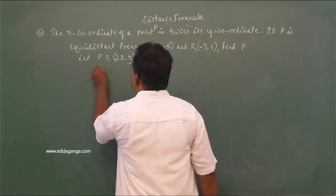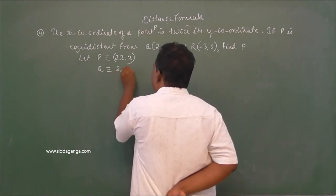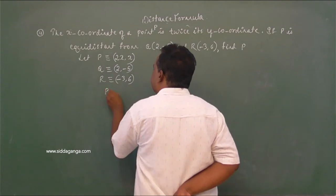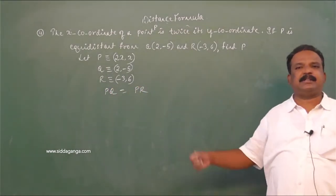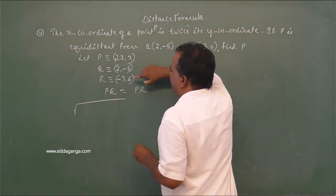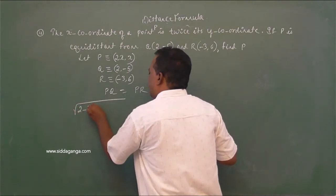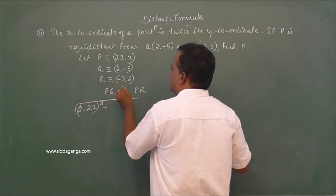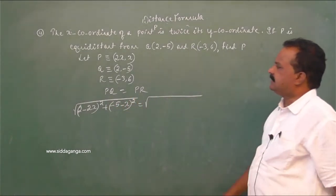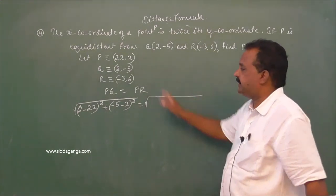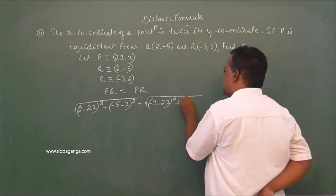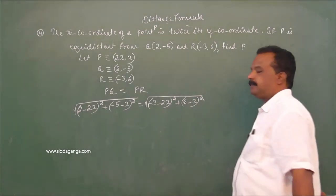What is Q? (2, −5). What is R? (−3, 6). P is equidistant from these two points, so PQ = PR. Apply the distance formula: PQ = √[(2−2x)² + (−5−x)²]. PR = √[(−3−2x)² + (6−x)²].